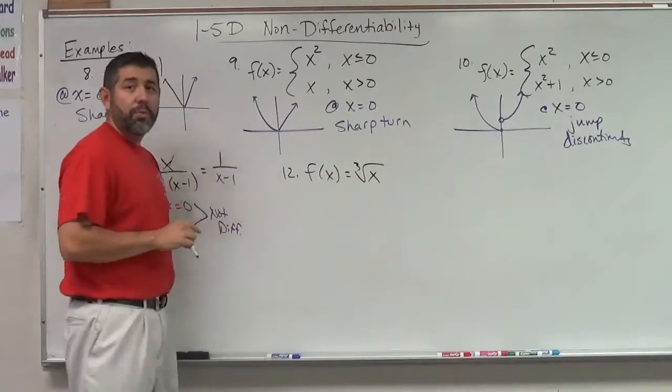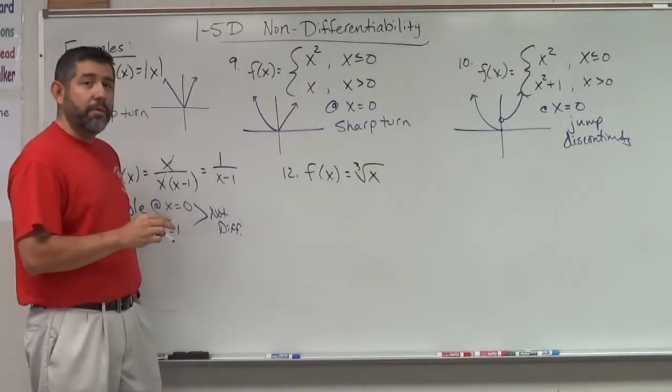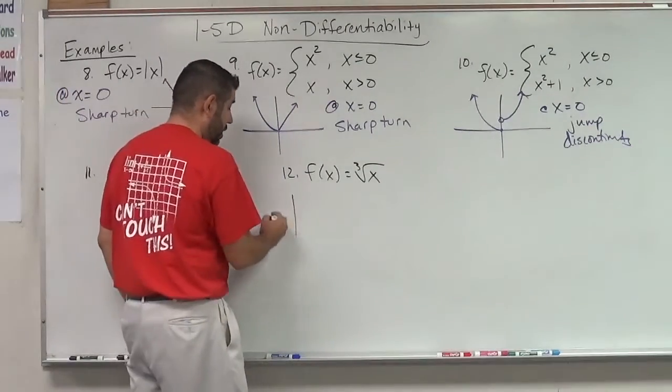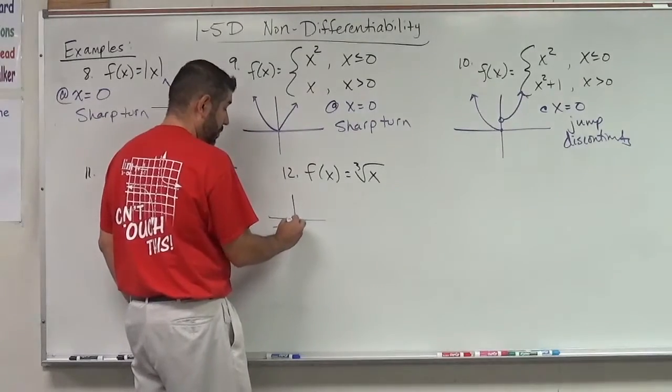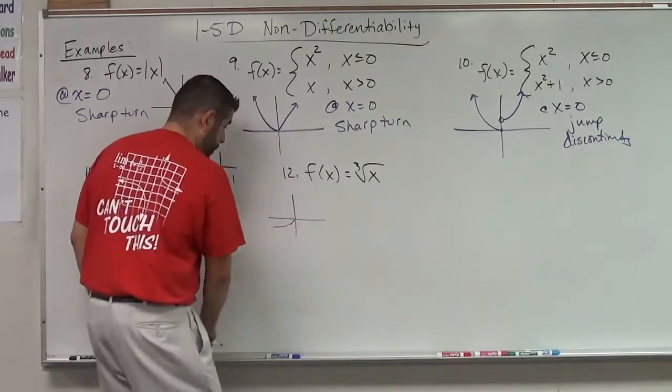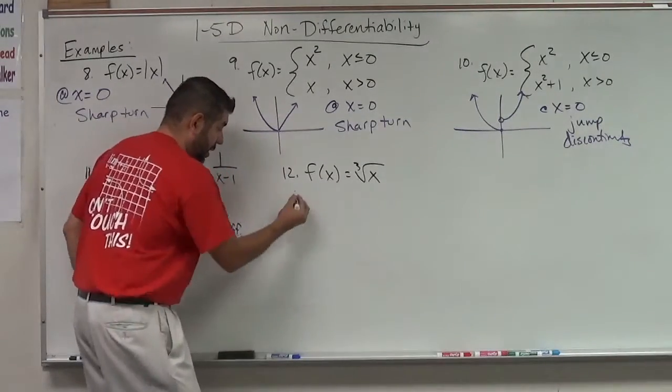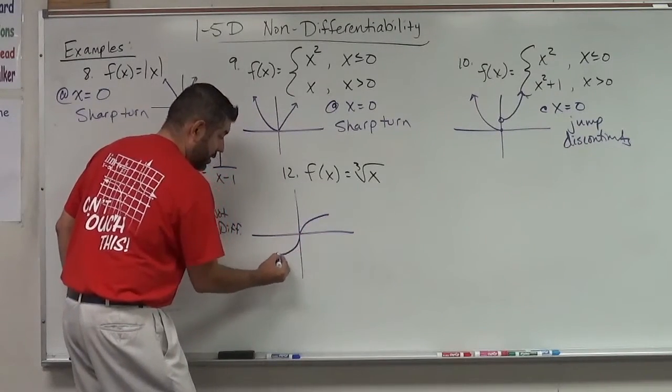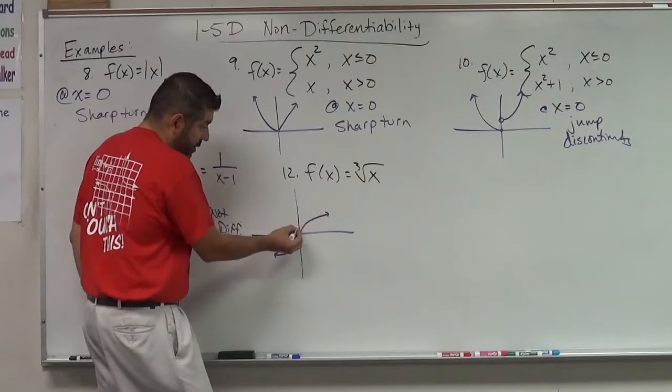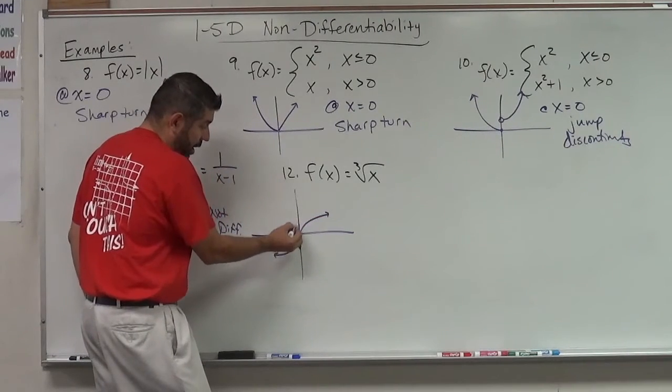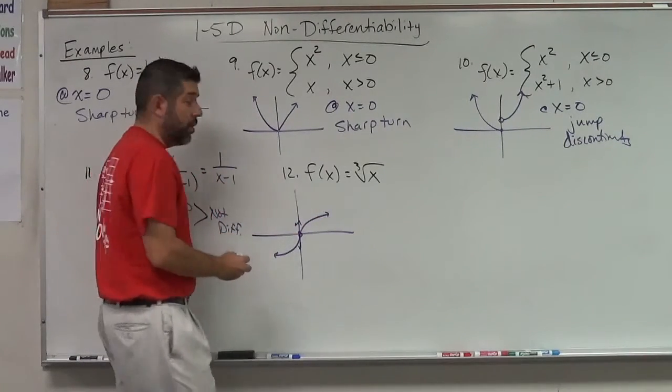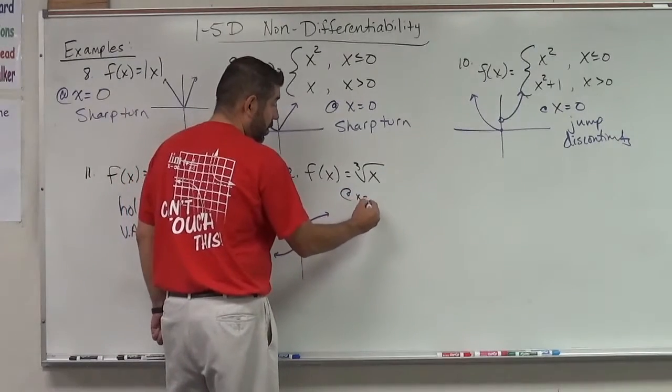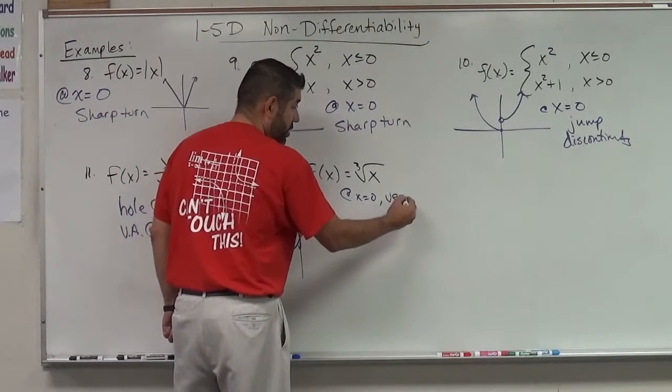What about number 12? The cube root of x. Well, the cube root of x is that one function that looks like this. It goes like this and then comes down like that and this way. You guys probably can't see that here. Let's draw this bigger. It goes like this and then comes down like that and this way. All right, this has a vertical tangent line at x equals 0. So at x equals 0, there's a vertical tangent line.